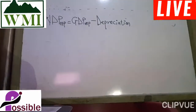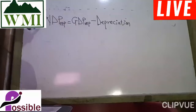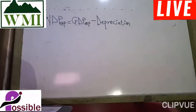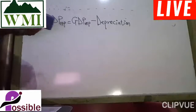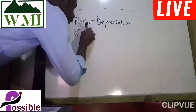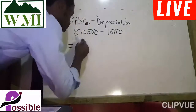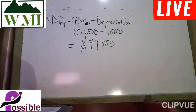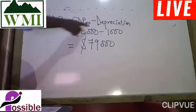Next, we calculate NDP at market price. NDP means gross has changed to net. To convert gross to net, we subtract depreciation. So: NDP at market price equals GDP at market price minus depreciation. That is $80,000 minus $1,000, which gives us $79,000. Therefore, NDP at market price equals $79,000.